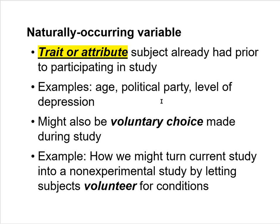Examples of naturally occurring variables include age, political party membership such as Democrat versus Republican versus Independent, and level of depression at the time someone enters the study. What they all have in common is that it's a trait or attribute the subject already had before they came to the study — not something the researcher forced them to experience.